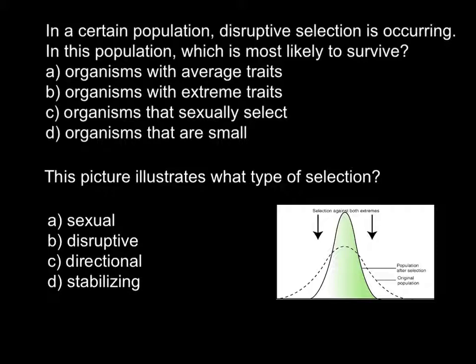Here is the first question. In a certain population, disruptive selection is occurring. In this population, which is most likely to survive? Answer A: organisms with average traits. Answer B: organisms with extreme traits. Answer C: organisms that sexually select. Answer D: organisms that are small.